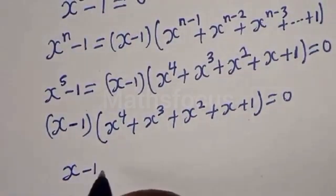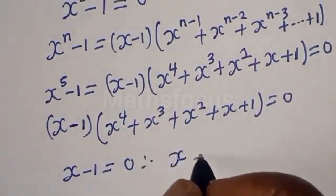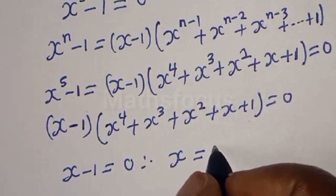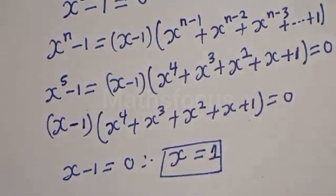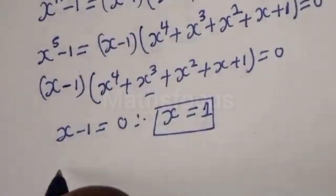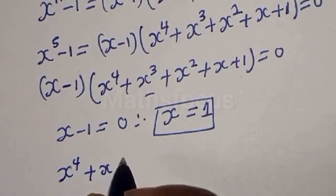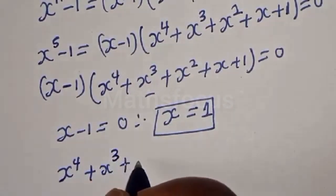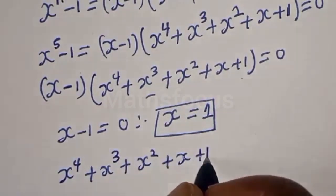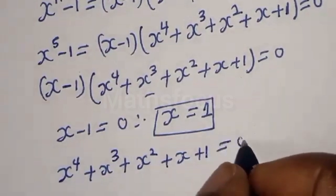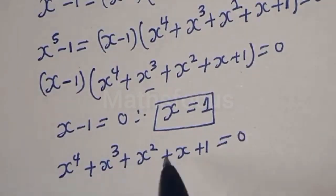Case one: x minus 1 equals 0, therefore x equals 1. And the second case is: x raised to power 4 plus x raised to power 3 plus x squared plus x plus 1 equals 0. Then let's divide all through by x squared.